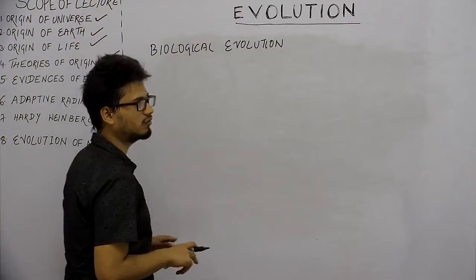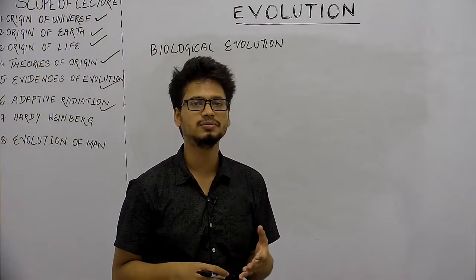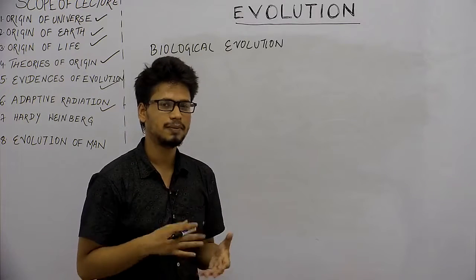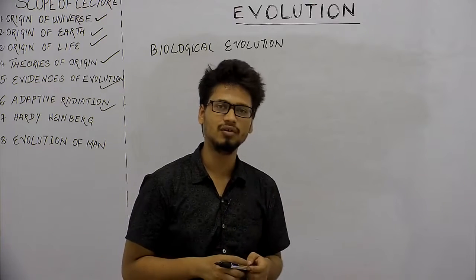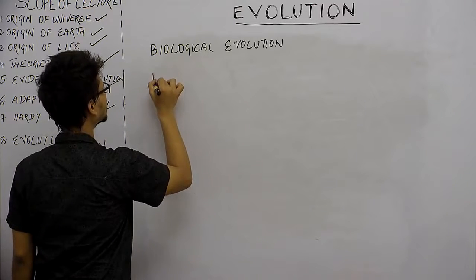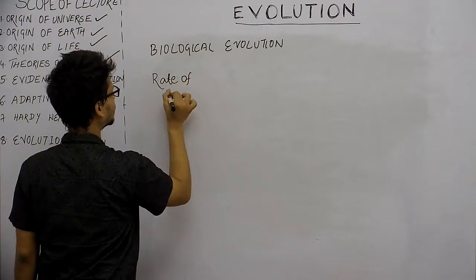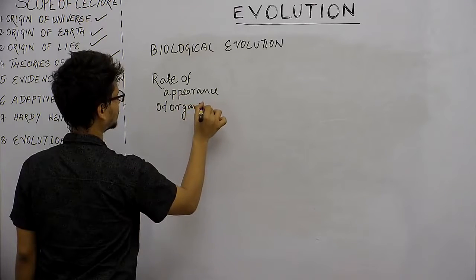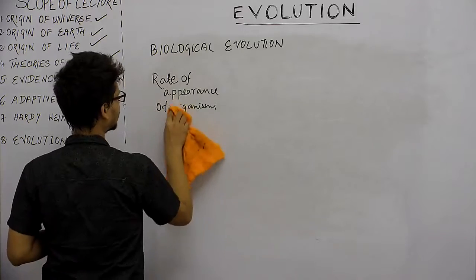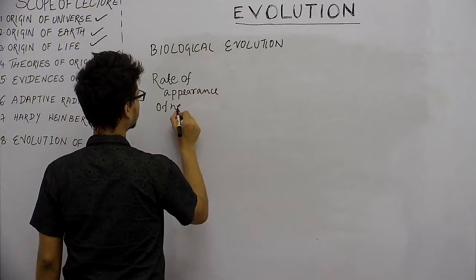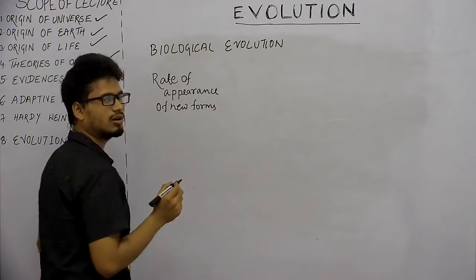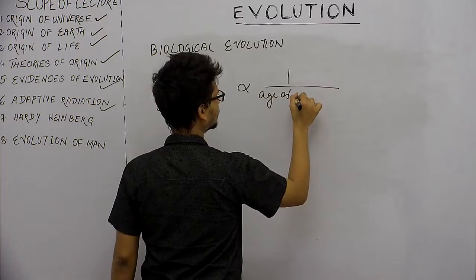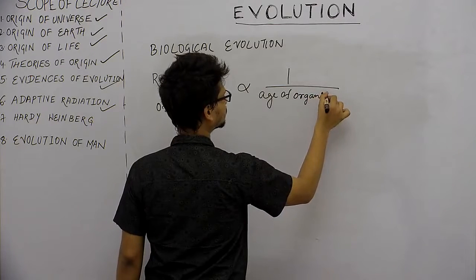When evolution is taking place, new organisms also start appearing that can evolve and rise in new forms. What is the relation? The rate of appearance of new forms is inversely proportional to the age of organism in question.